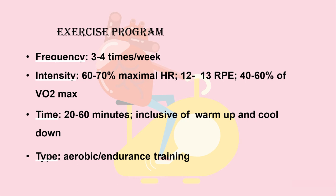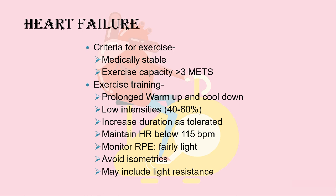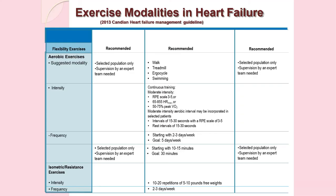The exercise program summary for Phase 3: frequency is 3 to 4 times per week, intensity is 60 to 70% of maximum heart rate, time period is 20 to 60 minutes, and type is aerobic and endurance training. A cool-down period prevents blood pooling in the extremities and enhances recovery.